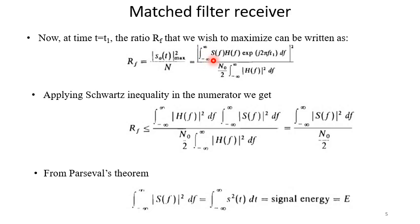So that can be written as integration magnitude of integration S(f)H(f) exponential j2πft_1 df whole square divided by N_0/2 integration |H(f)|² df.